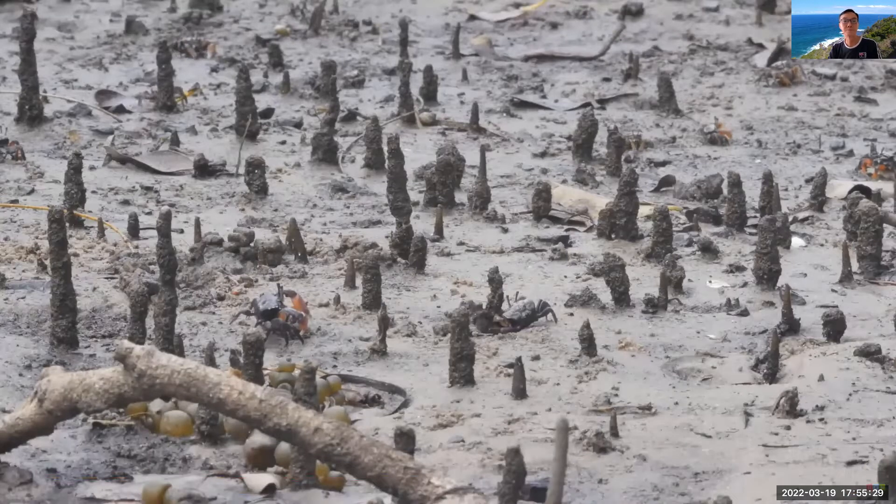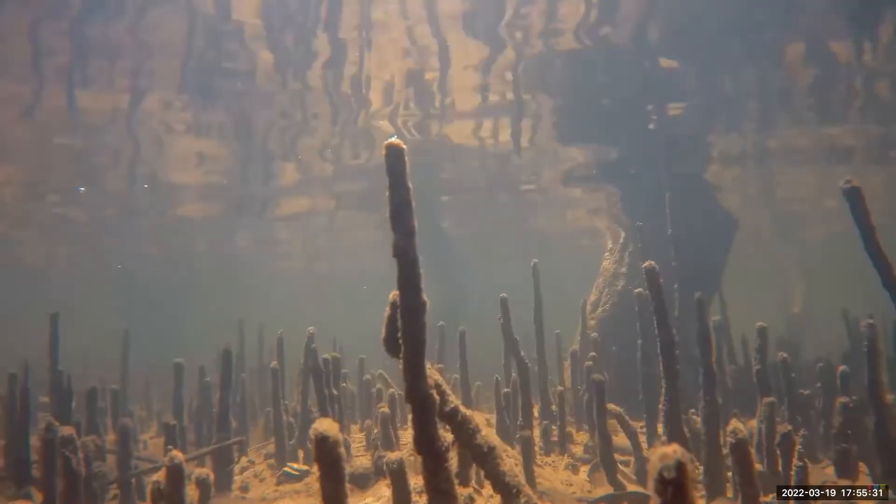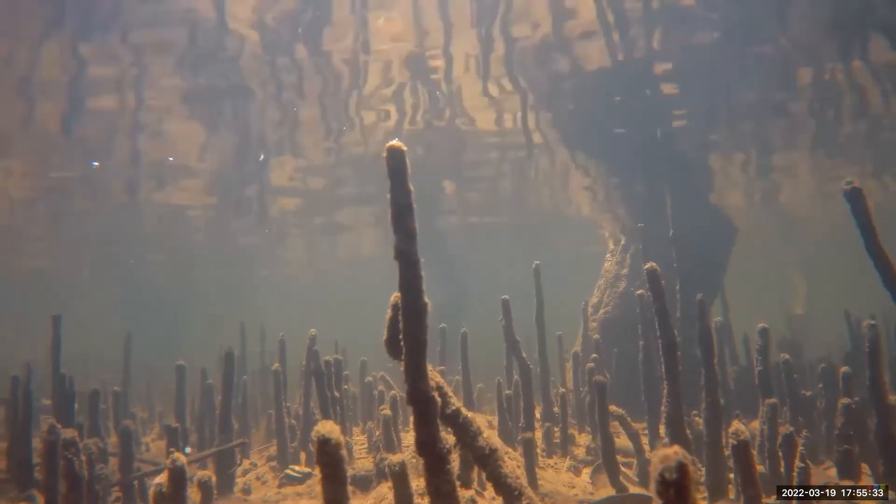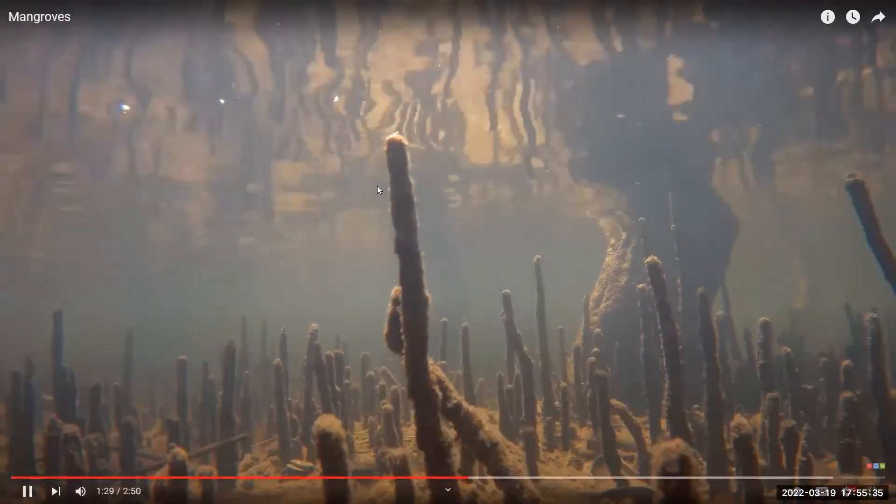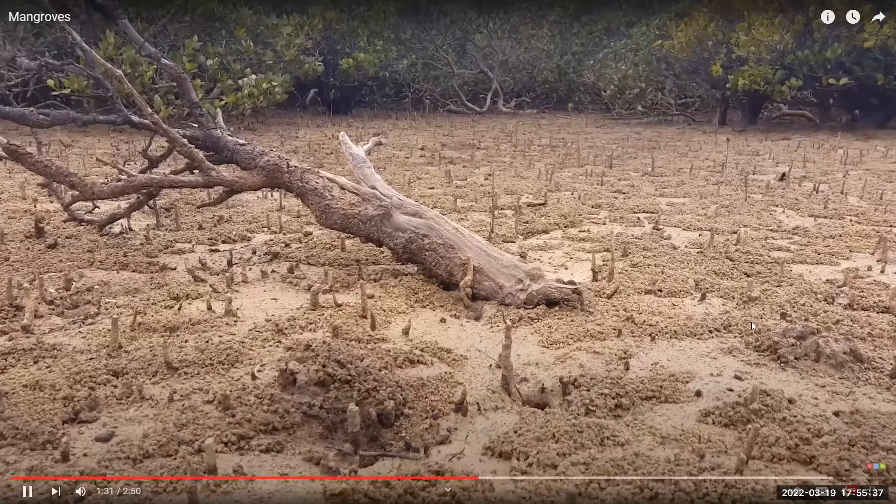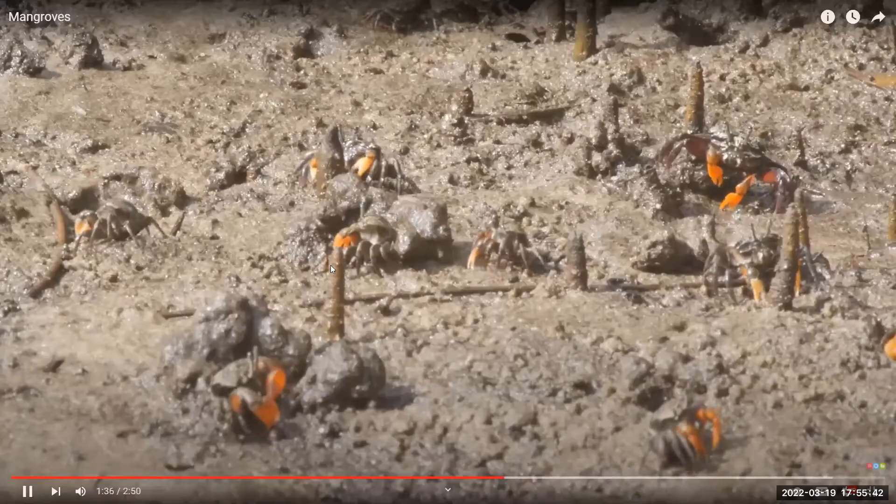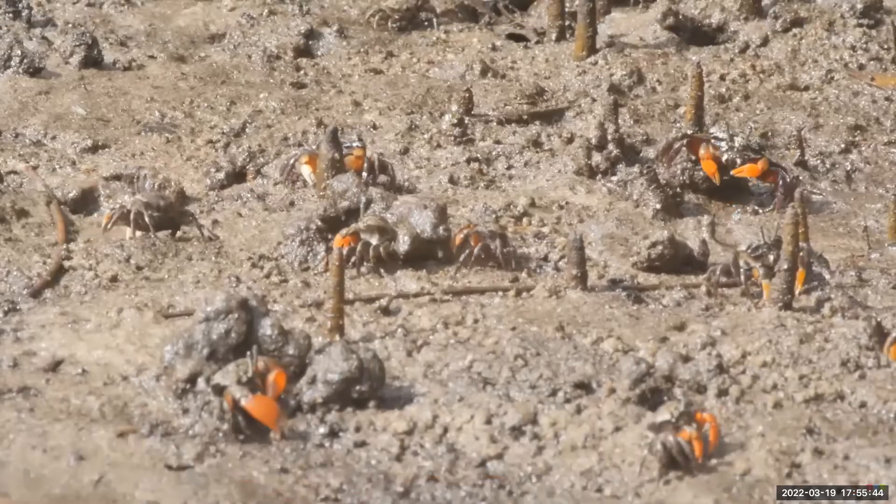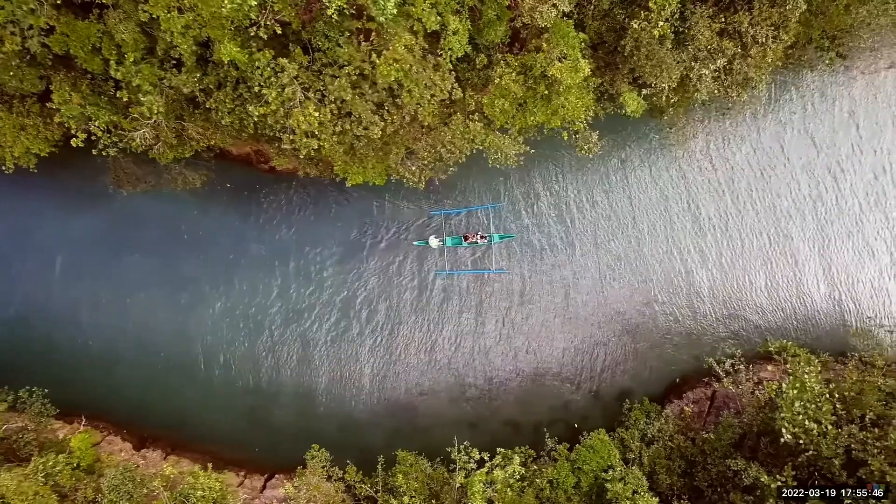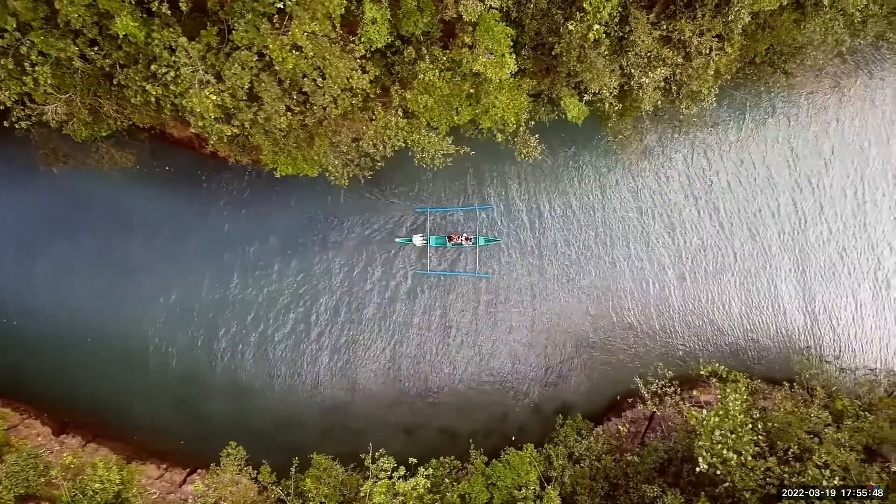These vertical structures stick up out of the soil and enable the mangrove root system to take up oxygen from the atmosphere. Another unique adaptation of mangroves can be seen in their life cycle.